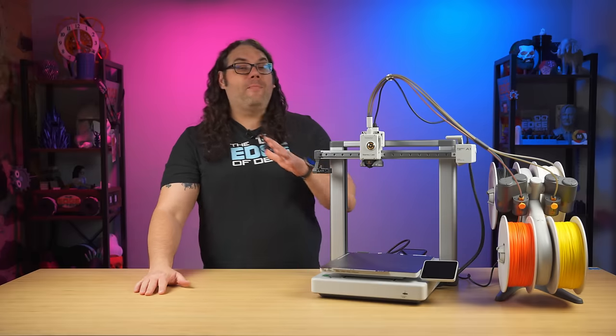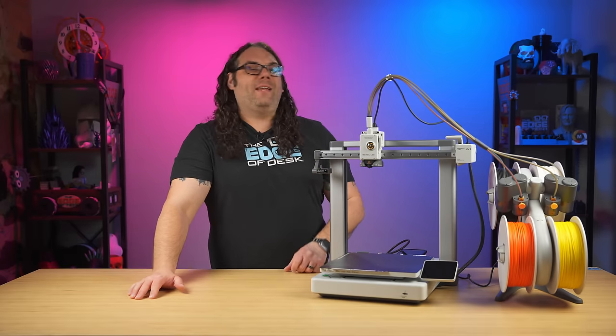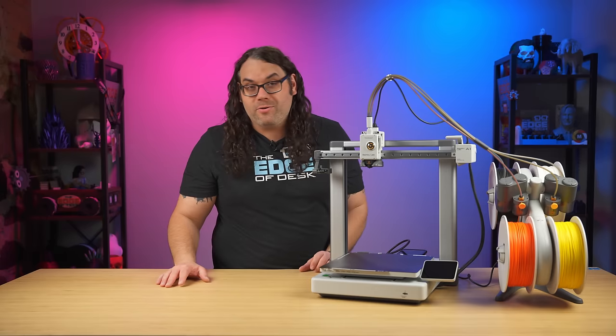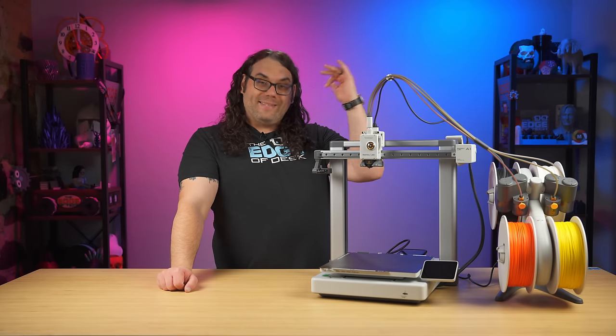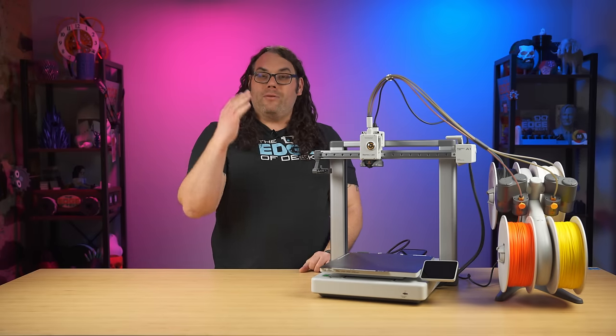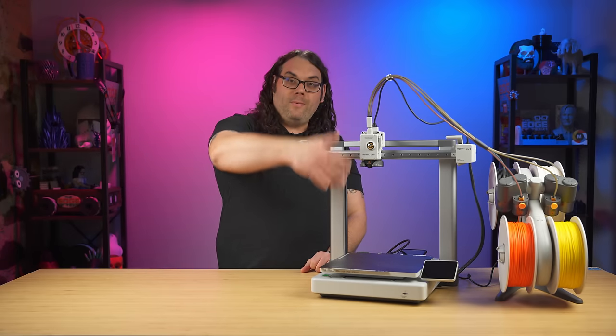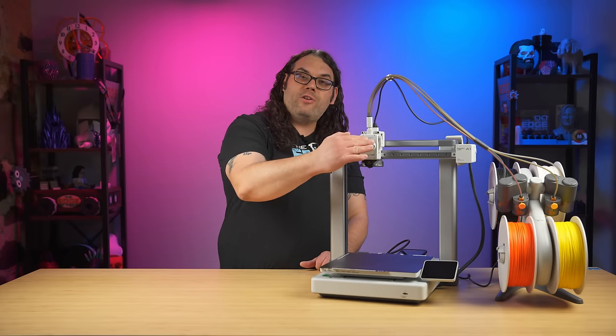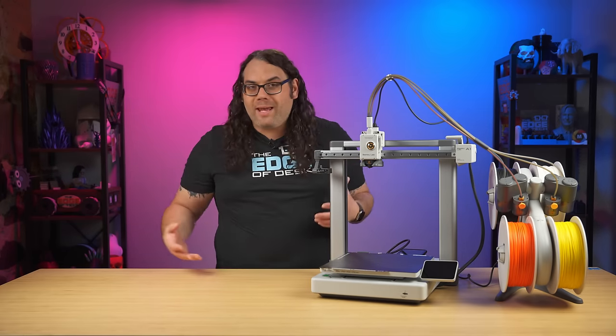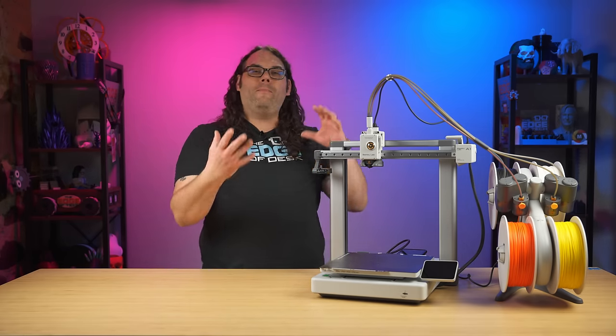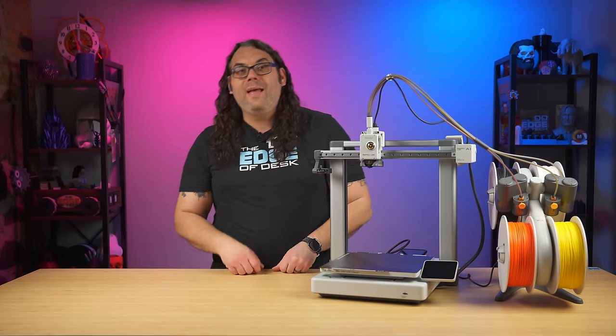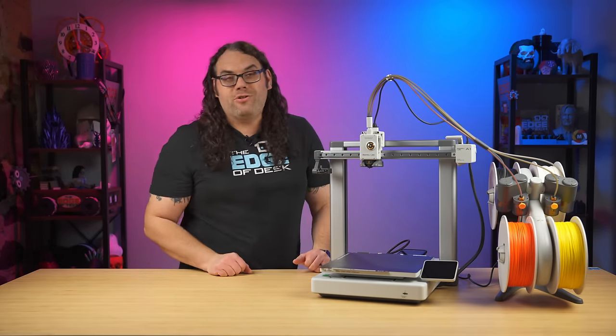It also has a filament runout sensor built in and Bamboo Lab claims that it has the most advanced filament monitoring system on 3D printers right now. It actually measures the existence of the filament, the speed at which the filament is traveling, the odometry, the tension above the extruder and the pressure underneath the extruder at the hotend. All of that comes together for one heck of a filament monitoring system.